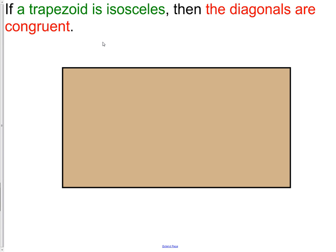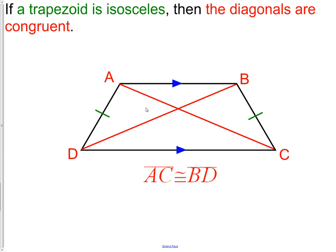If a trapezoid is isosceles, then the diagonals are congruent. This is only true for an isosceles trapezoid. In an isosceles trapezoid, opposite sides are parallel and opposite legs are congruent. In this case, diagonal AC and diagonal BD are congruent to each other. This is not true for other trapezoids — it is only true for the isosceles trapezoid.